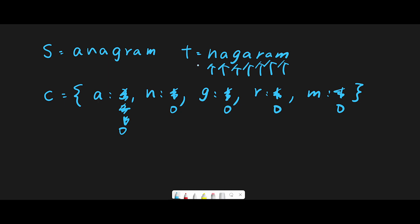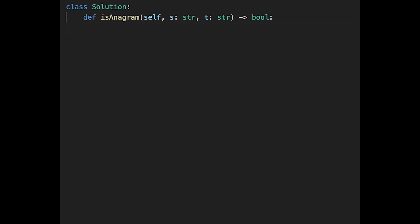Now let's think about a false case. If string t has an extra 'a', then after processing all values are zero but we still have an extra 'a', so a would go negative — we cannot create an anagram. Similarly, if string t has a 'b' that doesn't exist in string s, there is no 'b' in the counter, so we return false. That is the basic idea to solve this question.